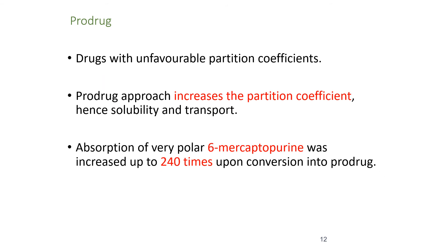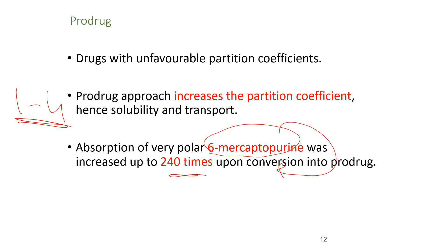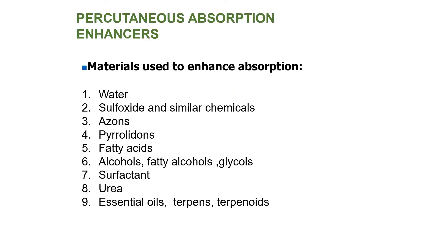The first strategy is making a prodrug — converting the drug to a prodrug with a certain polymer or excipient, after which the log P is adjusted to between 1 and 4, increasing permeation. For example, 6-mercaptopurine is a very polar drug, but after converting it to a prodrug, permeation through the skin can increase 240 times, which is a great achievement. We can also increase permeation using permeation enhancers such as water, sulfoxides, azones, pyrrolidones, fatty acids, alcohols, surfactants, urea, and oils — all of which will be covered in more detail in the coming slides.